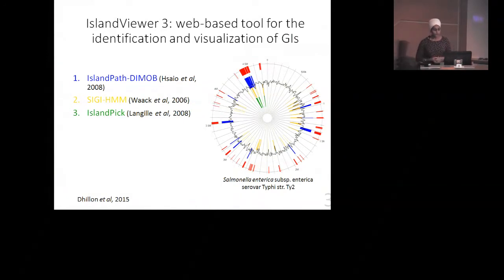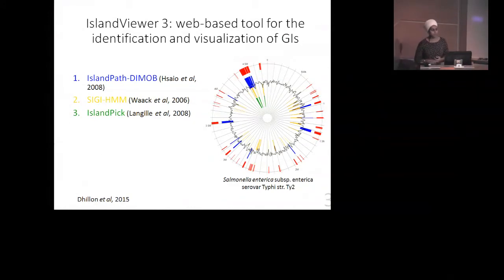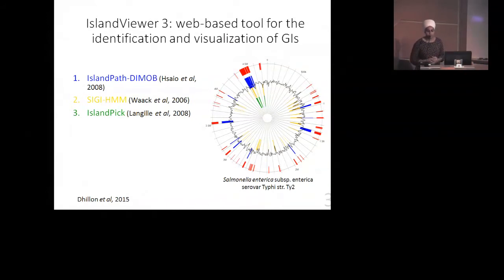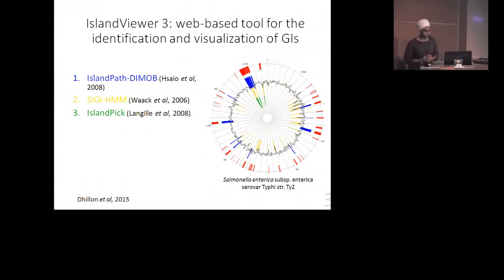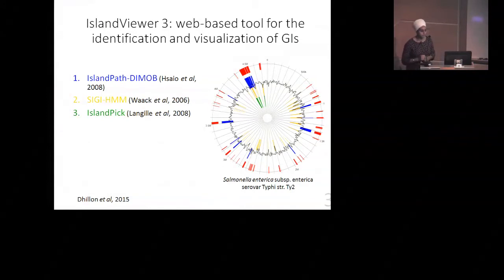The first two methods, Island Paths DIMOBE and CIGIHMM, use a sequence composition-based approach to detect genomic islands — they look at dinucleotide bias or codon usage bias, and look for immobility genes. The third method, Island Pick, is more of a comparative genomics approach where you're comparing your genome against closely related species to pick out the unique regions in that genome.